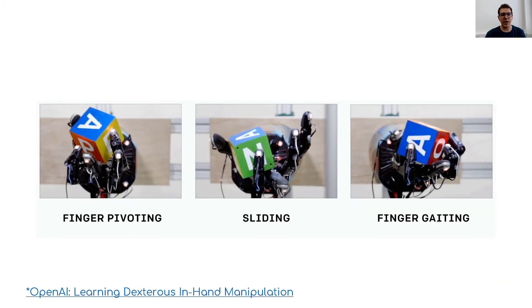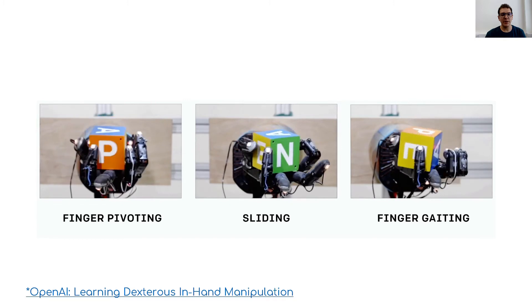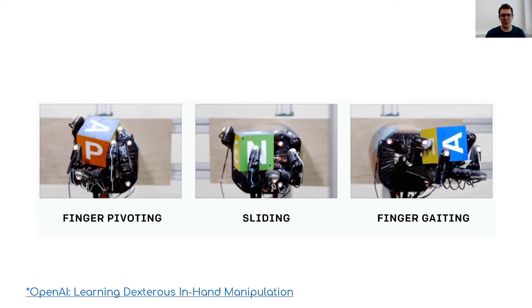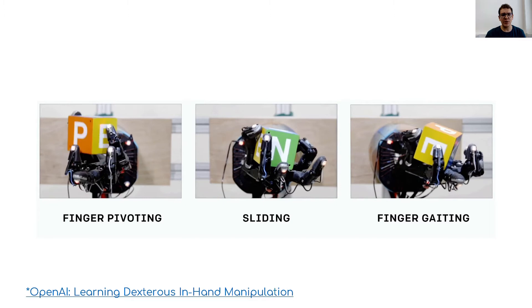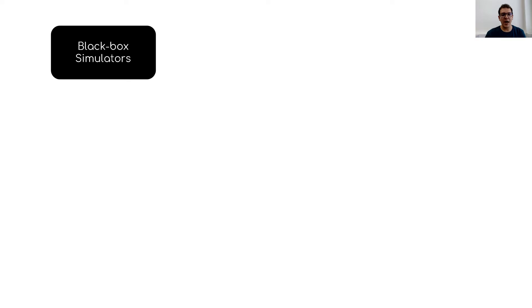Neural network policies are beginning to produce promising results when it comes to dealing with complex manipulation tasks, and very often these policies are trained using simulation technologies that create realistic environments. Such simulations, however, are mainly used as black boxes that, provided the current state and the current action, will return a next state.